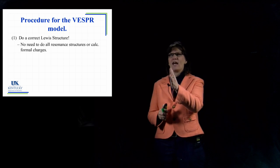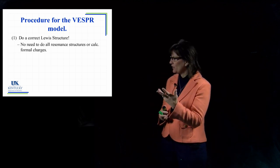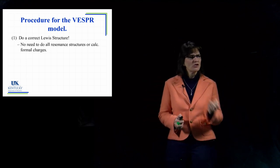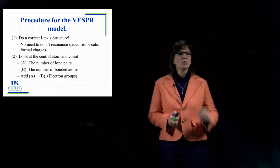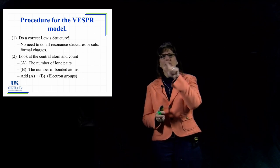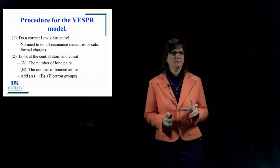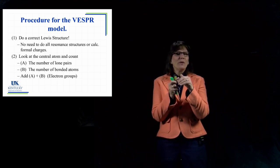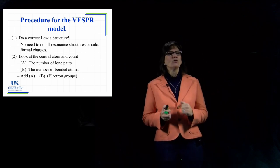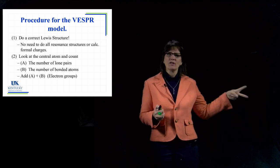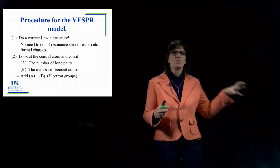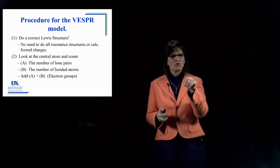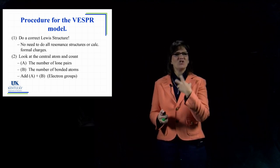Lewis structures are very important — the first thing we'll do is get a geometry from one. We need just one legitimate Lewis structure to work with. Next, we look at the central atom and count what are called electron groups. Electron groups are either atoms bonded to the central atom — regardless of whether it's a single or double bond, one bonded atom counts as one electron group — or lone pairs. We add up all those electron groups around the central atom, and that number defines the geometry.